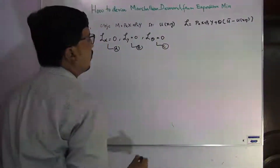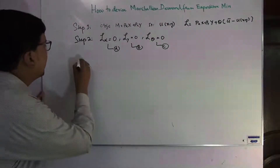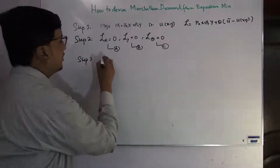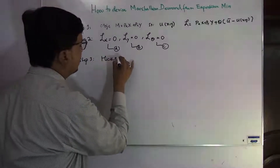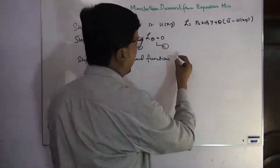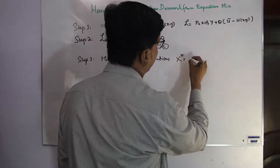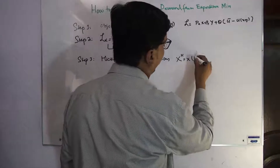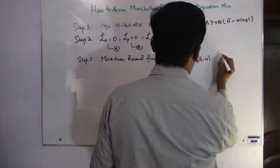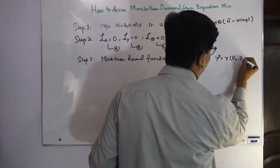By using all three equations A, B, and C, in step number three we solve them to get the Hicksian demand function. The Hicksian demand function xh is simply a function of the price of X, price of Y, and utility U. This is the Hicksian demand function: xh(Px, Py, U).